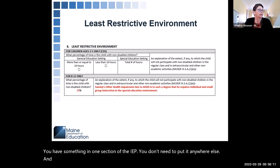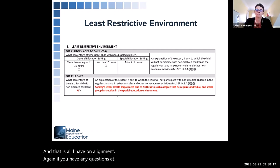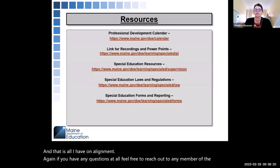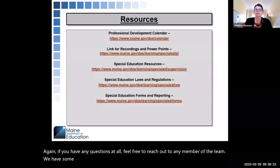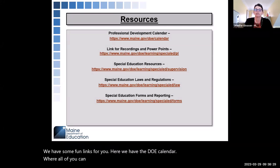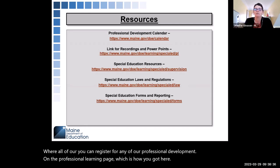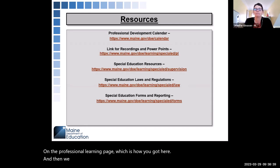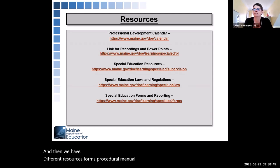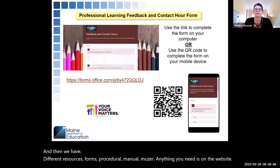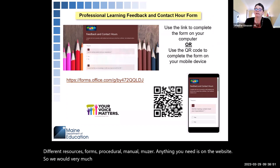That is all I have on alignment. If you have any questions at all, feel free to reach out to any member of the team. We have some links for you here — the DOE calendar where you can register for any of our professional development on the professional learning page, which is how you got here. We also have different resources: forms, procedural manual, MUSER — anything you need is on the website. We would very much appreciate your feedback about our professional learning, as we are always trying to make it better.